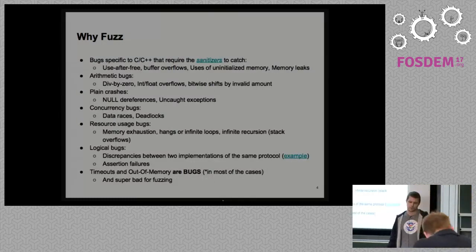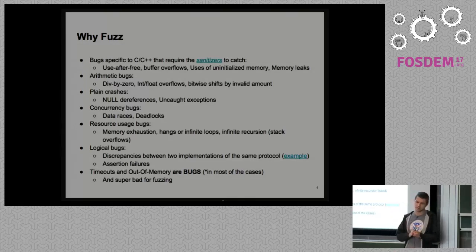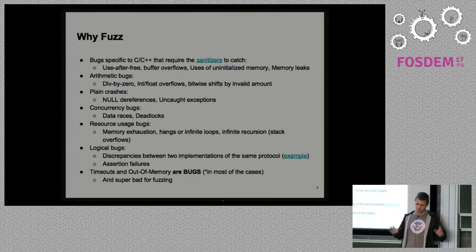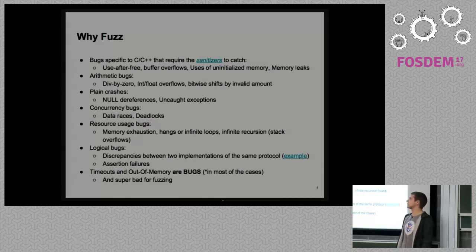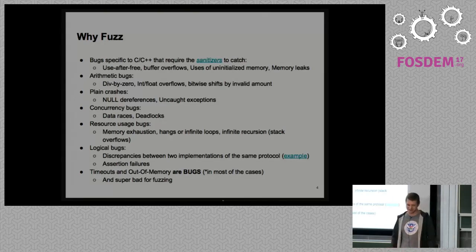Why is fuzzing good and why do people use it? Together with memory tools, also called sanitizers — address sanitizer, memory sanitizer, undefined behavior sanitizer, and so on — it helps to find a lot of bugs. Almost every type of memory corruption bug, any other crashes like null derefs, uncaught exceptions, data races. Like any stuff you may have in C or C++ written projects — all these types of problems can be found.